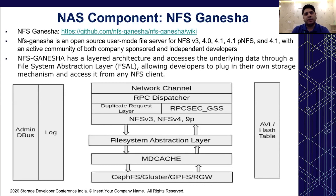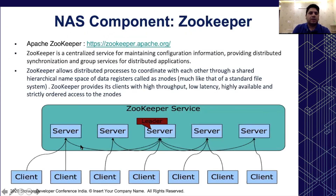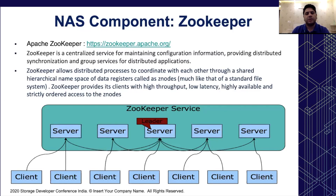NFS Ganesha uses AVL trees and hash tables to cache various data sets including handles, attributes, FS IDs, and states. More information about NFS Ganesha can be found from the link mentioned in the presentation. The other component we will use to build this solution is Apache Zookeeper.